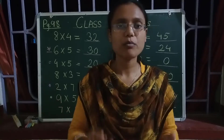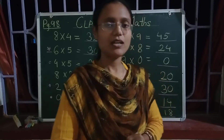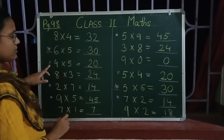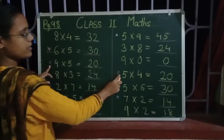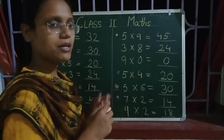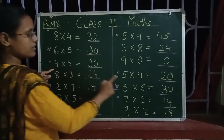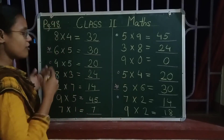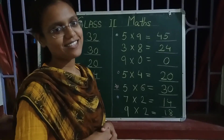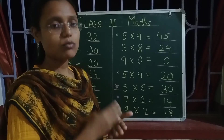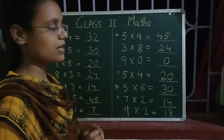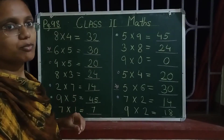That is called commutative property in mathematics — usse hum kehte hain commutative property. Let us see this circle mark here, and here also a circle is made. Here it is 4 into 5, and here it is 5 into 4. 4 into 5 is 20, and 5 into 4 is 20. Number ko agar interchange bhi kar diya hai, order agar change kar diya hai, toh bhi product humara same hi rahe ga. Usse hum kehte hain commutative property.